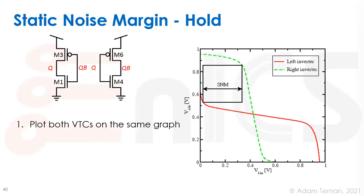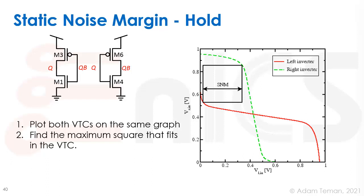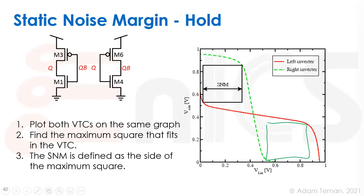So how are we going to get this? We plot the voltage transfer curves of both inverters on the same graph, and then we find the maximum square that fits into the VTC. There will be one square for the zero area and one for the one area. We take the minimum of the static noise margin from these two lobes — the side of the square which is the minimum of the maximum square fitting into the lobes of the butterfly curves.